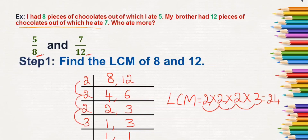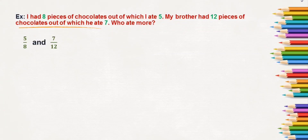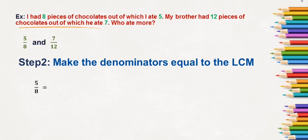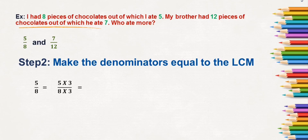Now that we have the LCM as 24, the next step is to make the denominators equal to the LCM, which is 24. For the first fraction 5/8: 8 times what equals 24? 8 times 3 is 24. So we multiply both the numerator and denominator by 3. 8 times 3 is 24, and 5 times 3 is 15. So 5/8 becomes 15/24.